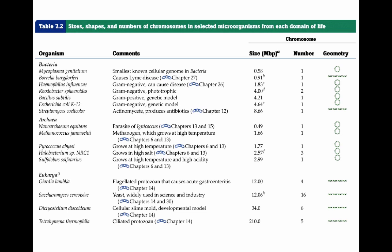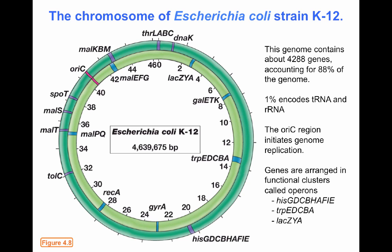Here is an example of the chromosome from E. coli strain K12, one of the most used strains in research. This is a 4.6 million base pair chromosome containing about 4,288 genes, about 88% of the genome made of open reading frames. One percent of this chromosome encodes tRNAs and ribosomal RNAs. Every circular chromosome has an origin of replication, shown here in red, where replication begins.